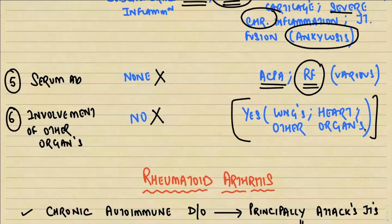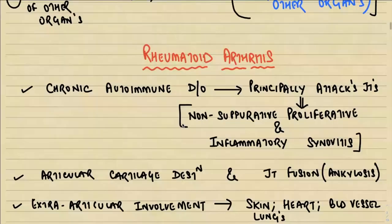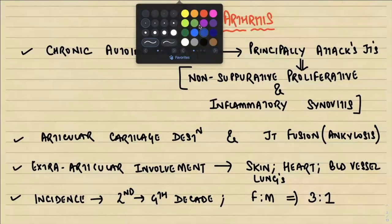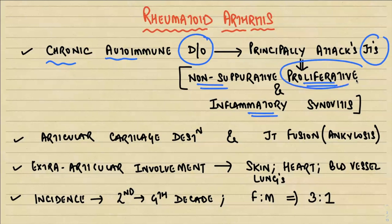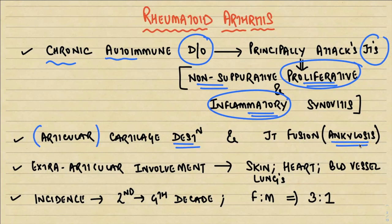Rheumatoid arthritis is a chronic autoimmune disorder principally attacking the joints, creating a non-suppurative proliferative inflammatory synovitis. It is characterized by articular cartilage destruction and joint fusion called ankylosis — initially fibrous ankylosis, which ossifies over time giving rise to bony ankylosis. Not only bones but there is extra-articular involvement of the skin, heart, blood vessels, and lungs. It occurs in a younger age group, in the second to fourth decade, and is three times more common in women than men.